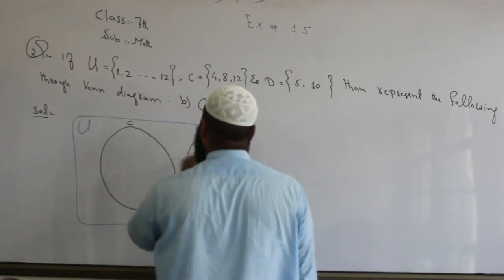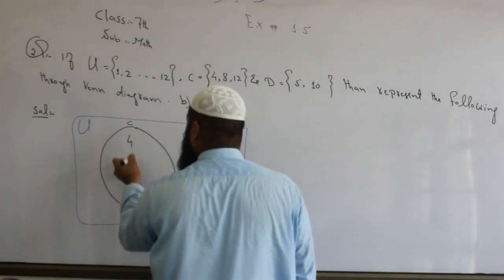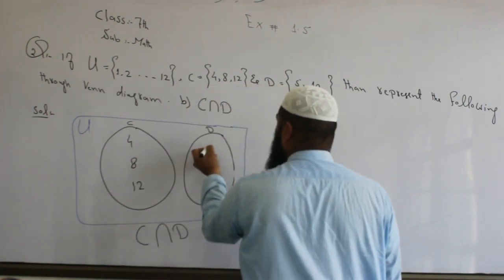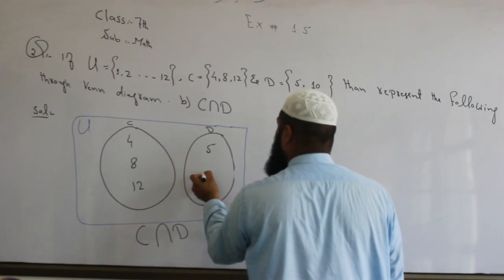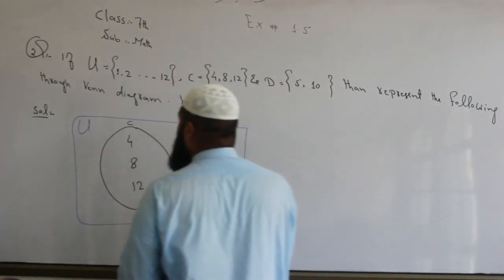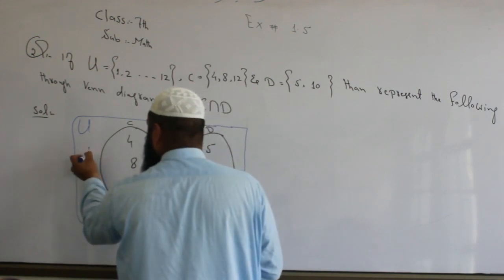The members are: Set C has 4, 8, and 12. Set D has 5 and 10. The universal set members: 1,